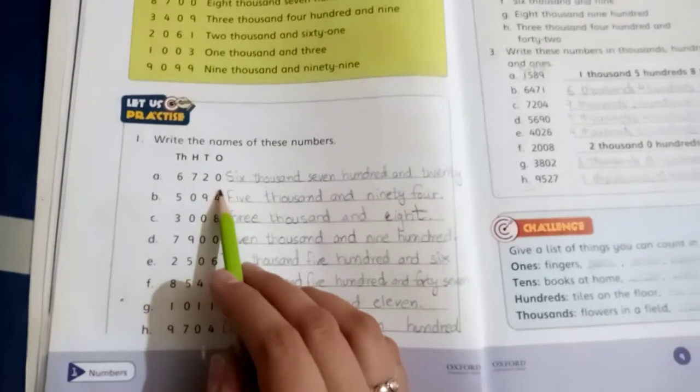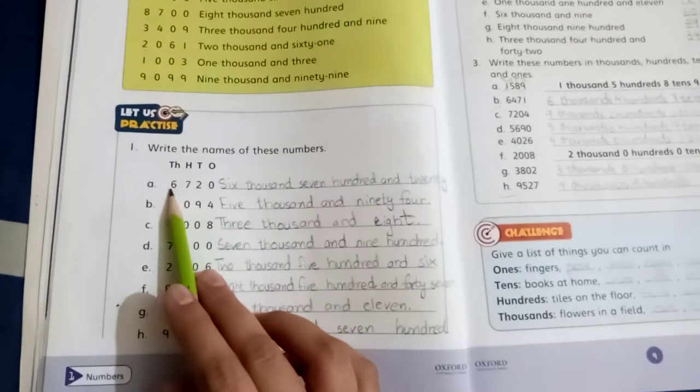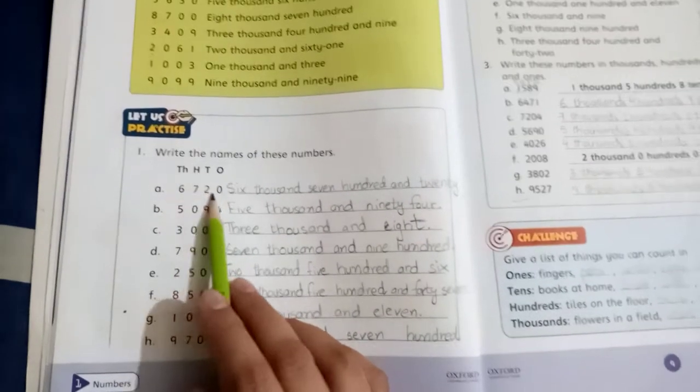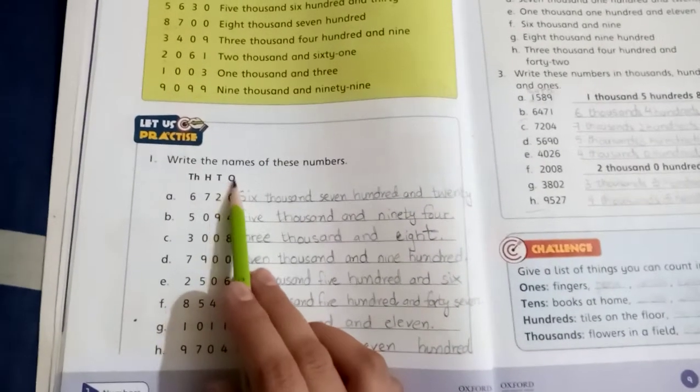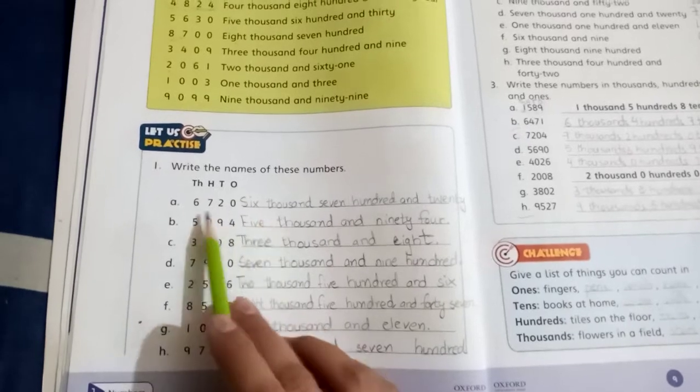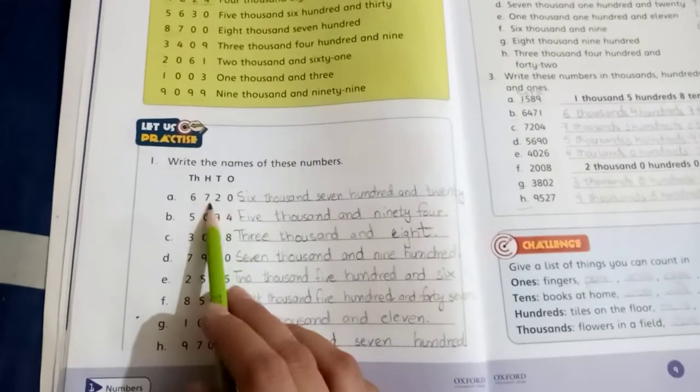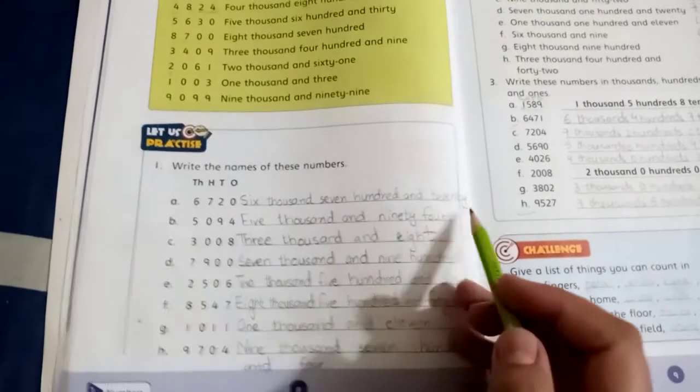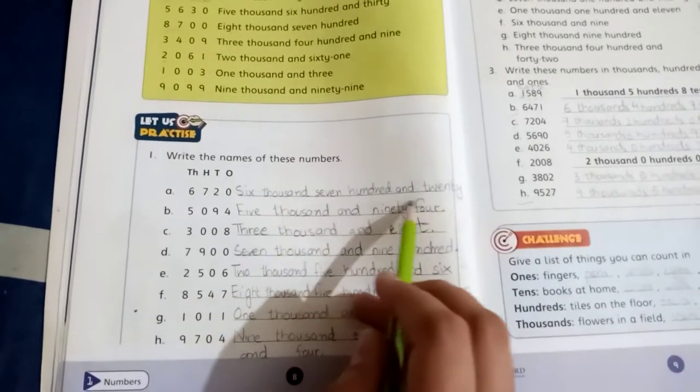First, I have to tell you some parts. This is the number 6,720. She has written over here they have shown us their places: ones, tens, hundreds, thousands. With the help of these places, we can write the numbers easily. 6,720, so we will write like this in the words.